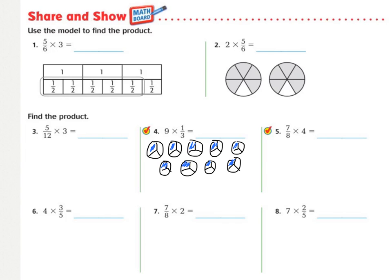Right here, for number 4, on the model, I drew, it was 9 times 1 third. So, I drew 9 circles, and I divided them into 1 thirds. And then, because it's 1 third, I shaded in 1 of each of them. And so, I ended up coloring in 9 thirds, which reduces to be 3, because there are 3 groups of 3 in 9. Now, if I use the algorithm, I would have had 9 over 1 times 1 third, which I would have gotten 9 times 1 is 9, 1 times 3 is 3, and again, it reduces down to 3.